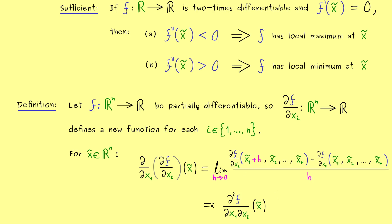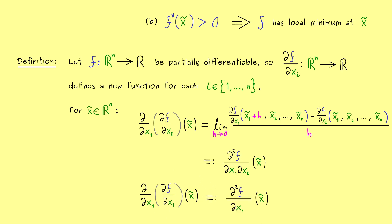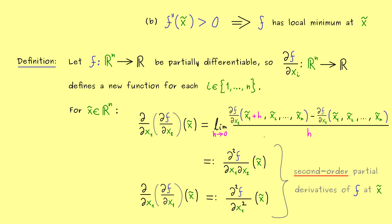That was just an example for x1 and x2, but of course you can generalize to all indices. The only special notation to mention: when we use the same index twice, we shorten the denominator and write dx1 squared — and similarly for x2, x3, and so on. All of these partial derivatives are called the second-order partial derivatives of f at the point x-tilde. The term 'second order' tells us we have the partial derivative of a partial derivative.